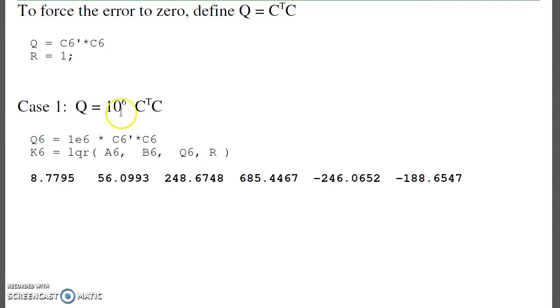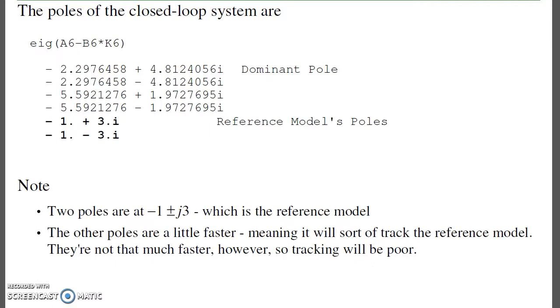LQR methods tend to use fairly large gains. I get my set of feedback gains. This is the gain times x. This is the gain times the reference model. If I look at the poles of the closed loop system, the reference model's poles are fixed. They don't change. The plant's poles are shifting.